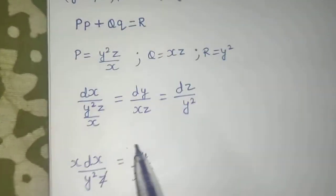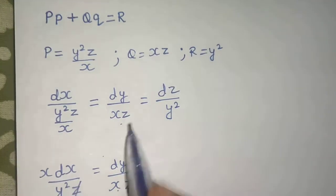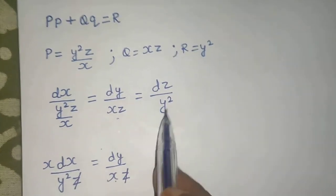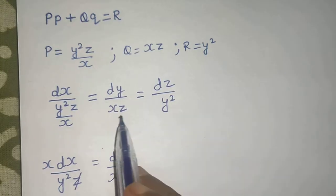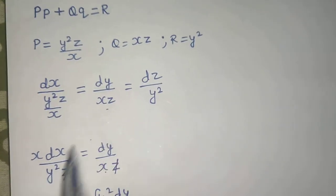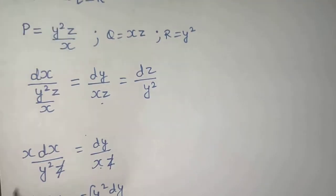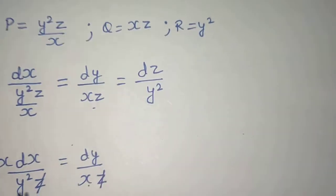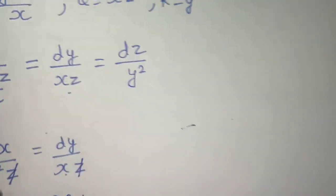Now similarly, if you want to equate second and third, there might be problem. Because you have dy, you have got y square, no problem. But an extra x is there which you will not be able to remove. So what I am doing, I am equating first and third.